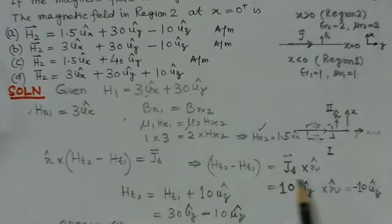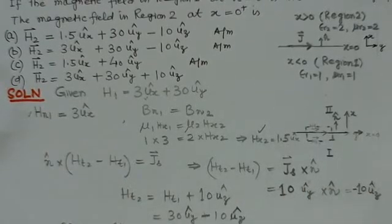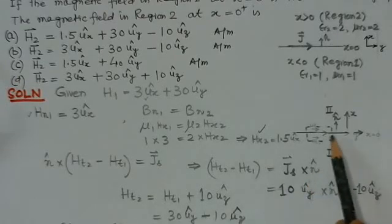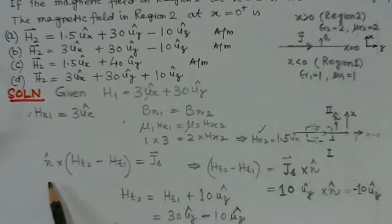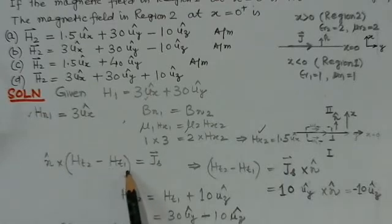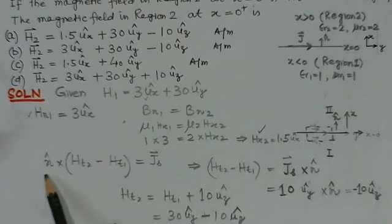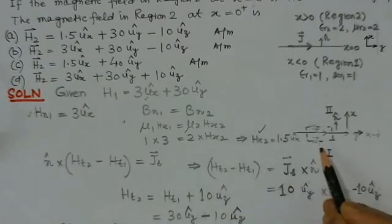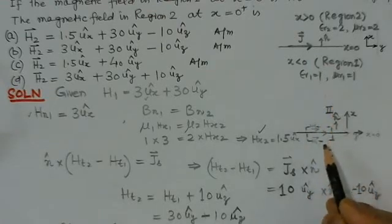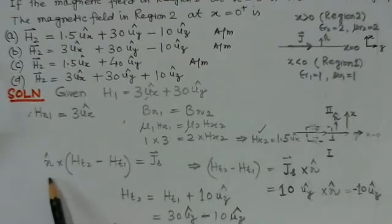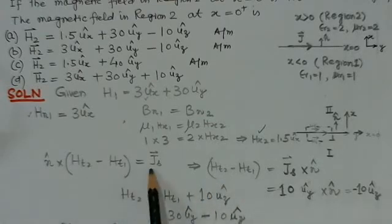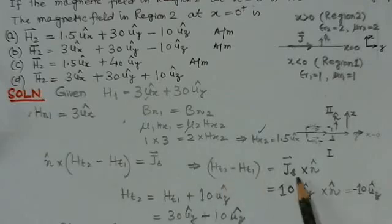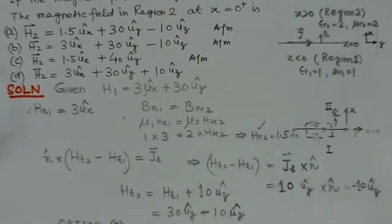Now we have to find the other components of the magnetic field in the other region and we apply the boundary condition for the tangential component. The tangential component of the fields are given as n × (H_t2 - H_t1) = J_s, where n is the normal at the boundary surface. This equation can be written as H_t2 - H_t1 = J_s × n.